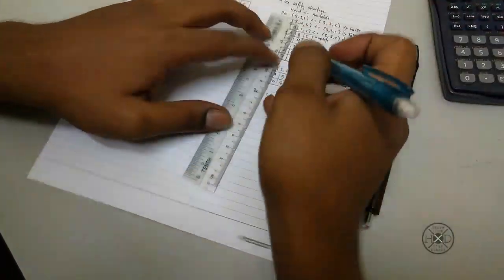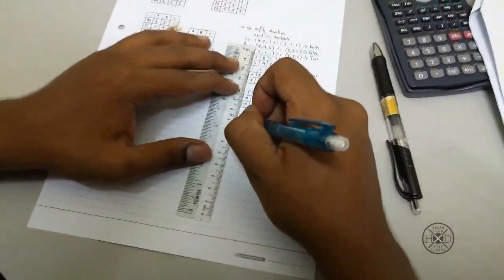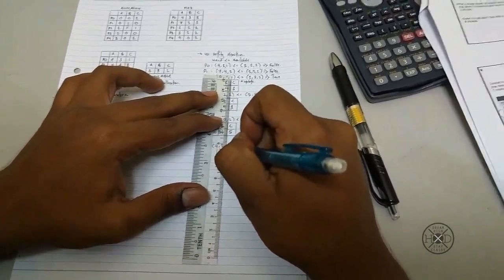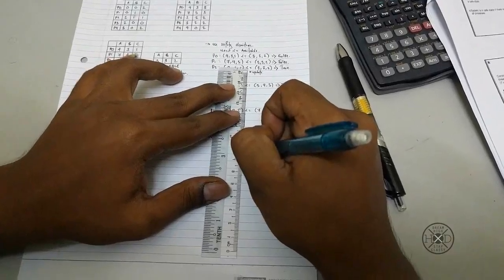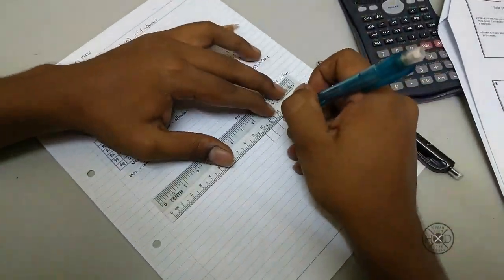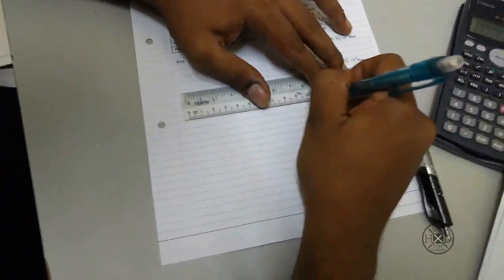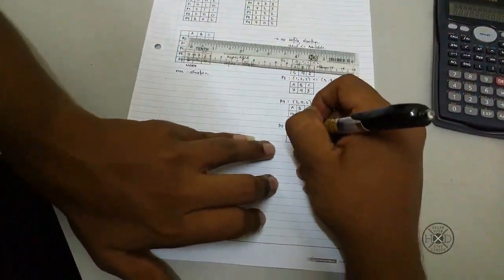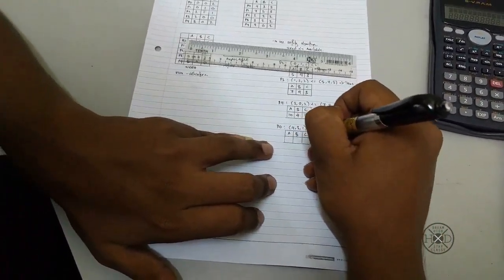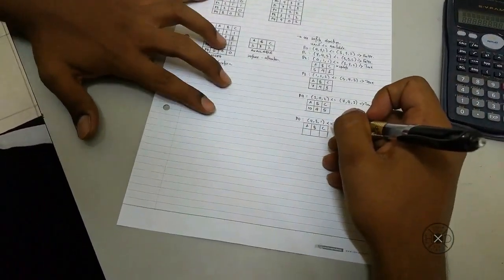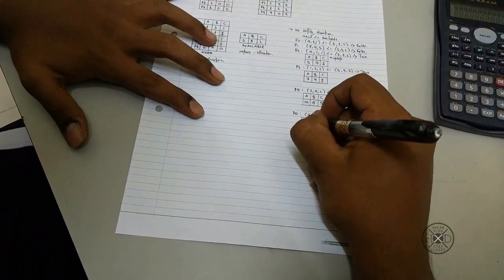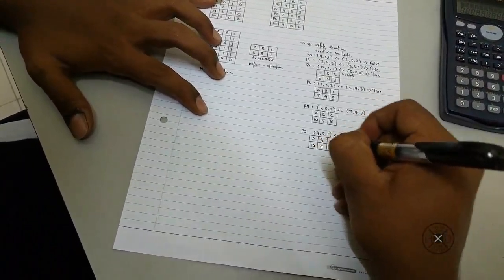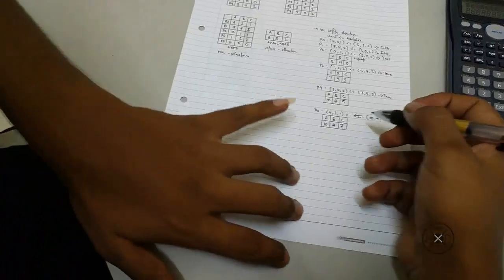So we will update it again. The new value for process 0 is 10, 4, 7.